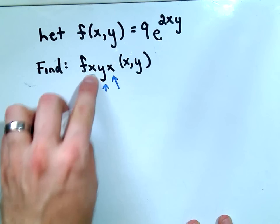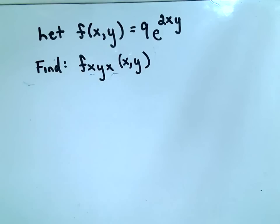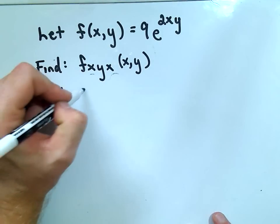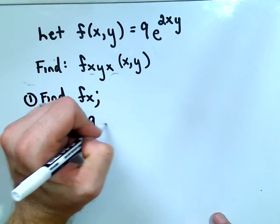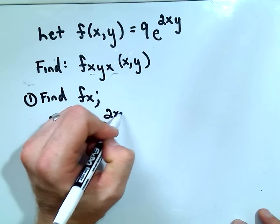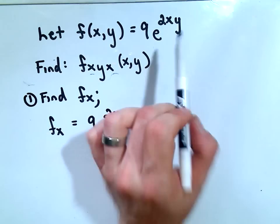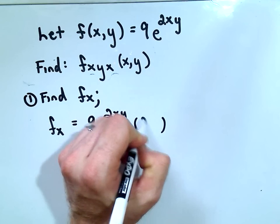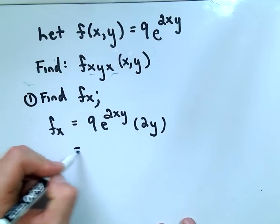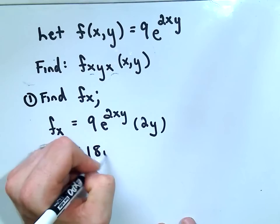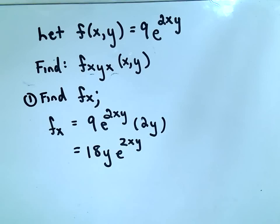So let's do this example. We've got our function and we want to calculate f_xyx. The first thing we'll have to do is find the partial derivative with respect to x. The derivative of e to anything gives you the exponential right back, then you take the derivative of the exponent. Since I'm taking the derivative with respect to x, I treat x as a variable and 2y as a constant, so I'm left with this extra 2y. Simplifying: 9 times 2 is 18, giving us 18y e to the 2xy.